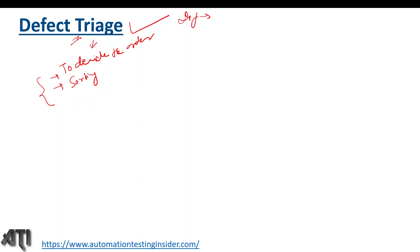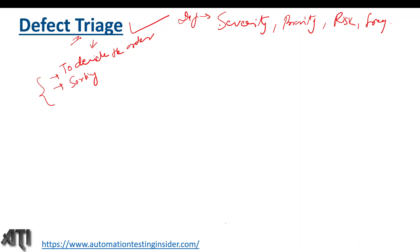Now, what is the definition of defect triage? Defect triage is the process to prioritize defects based on four factors: severity, priority, risk involvement, and frequency. These are the four key factors. In defect triage, we prioritize defects based on severity — that is, how bad the defect is. We've already spoken about severity and priority in a previous video, so please go watch that if you haven't.